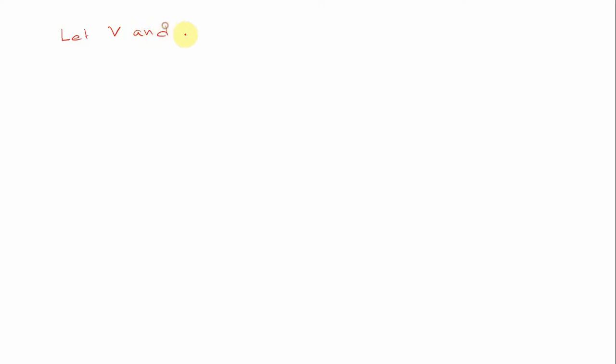Now we are going to discuss how we can find a linear transformation from one vector space to another. So let V and U be two vector spaces over the same field F.